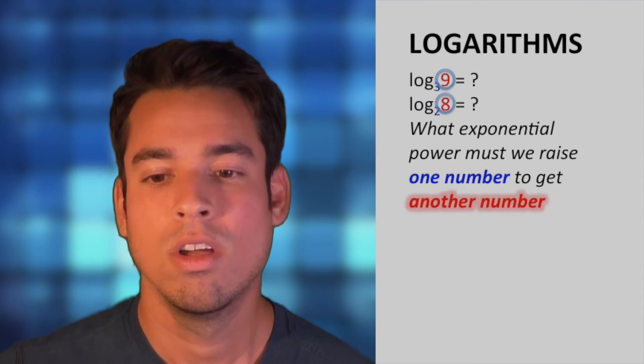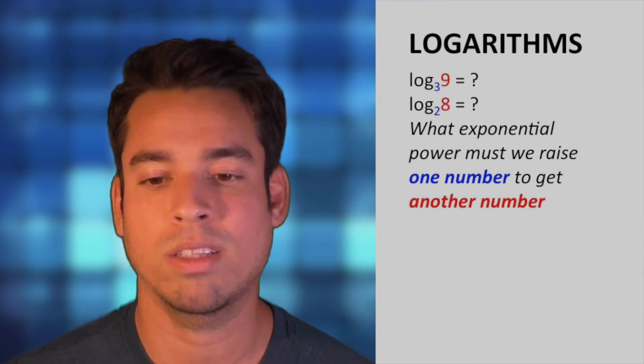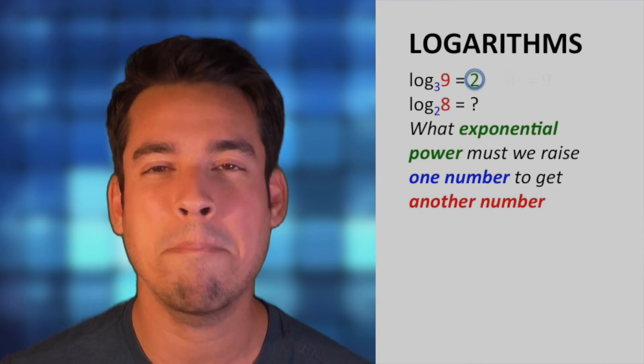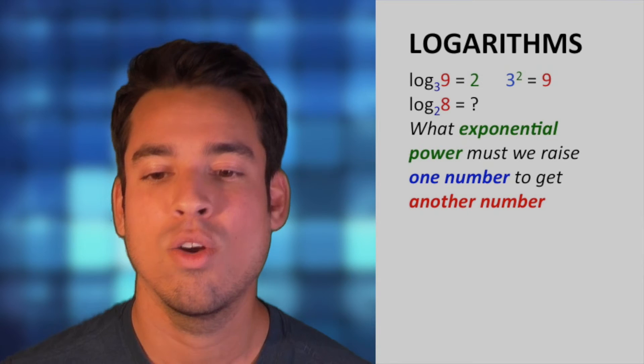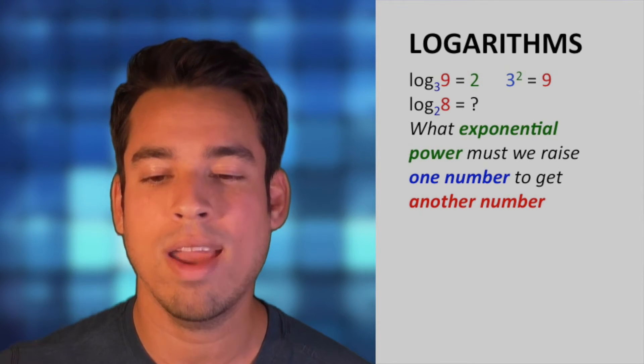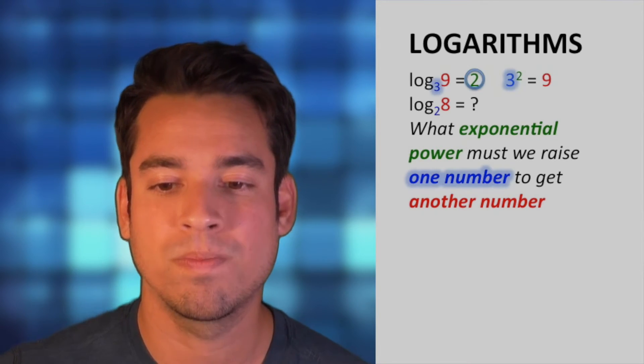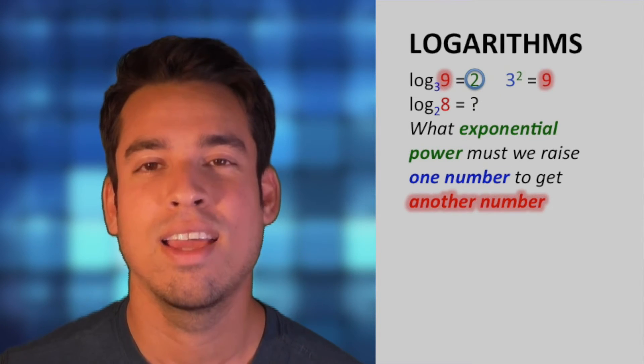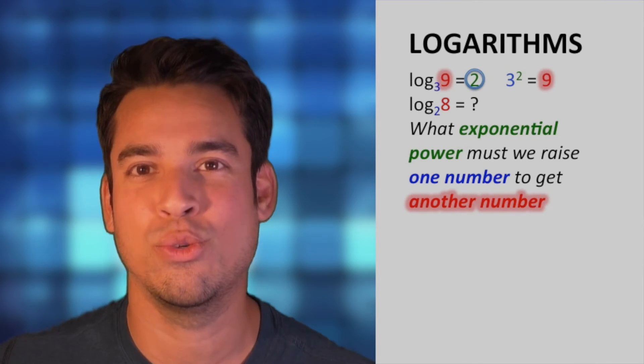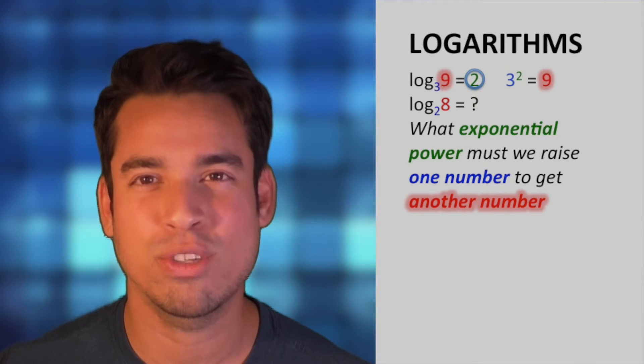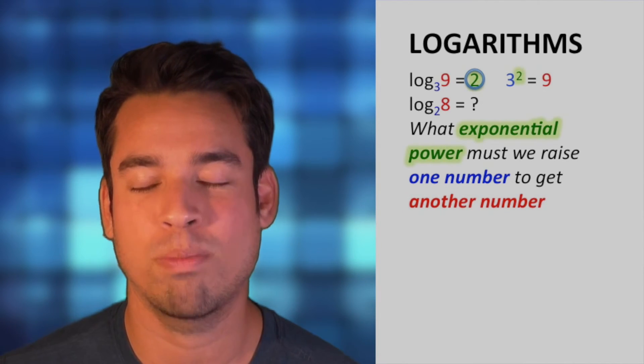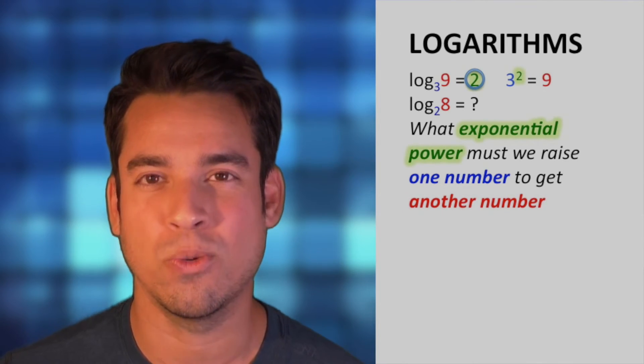Let's think about it from this perspective. When we say what exponential power must we raise one number, this is referring to the base number. So log base 3 of 9 is saying what exponential power must we raise the number in blue to get the number in red. Basically it's saying, what power do we have to raise 3 to to get 9? Most of us know 3 squared is 9, so the exponential power here is 2.